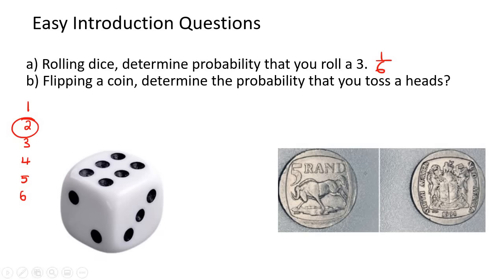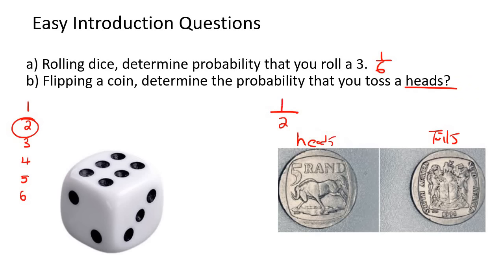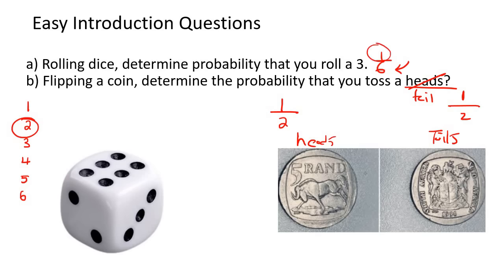Now flipping a coin — you've got heads and you've got tails, so there are two possibilities. If you want to flip a head, how many heads are there? There's one, so you could say one out of two. If you wanted to flip a tail, that would also be one out of two. So that's the basics of probability: the number at the bottom is how many things there are, and the number at the top is the thing that you are looking for.